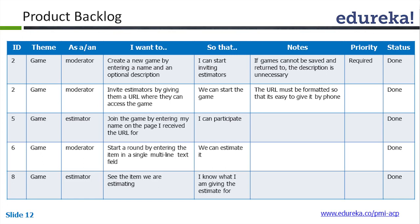Status is used to maintain traceability — done, in progress, open, pending, waiting for a response or clarity — whatever you need. So this is the typical structure of a product backlog.